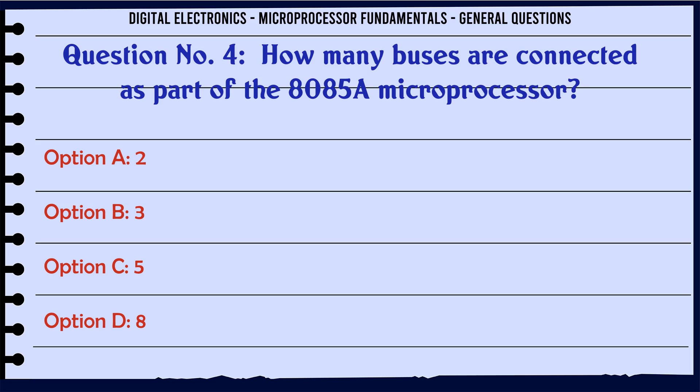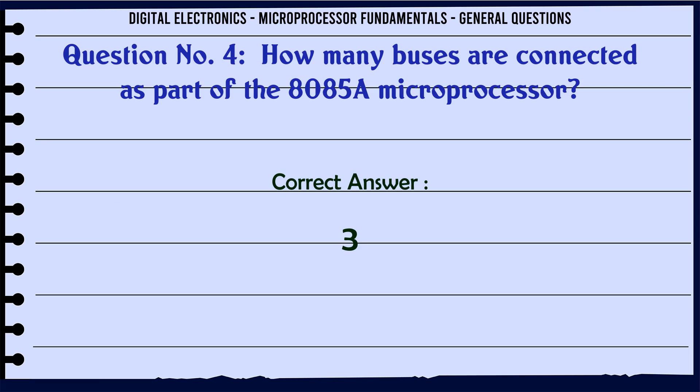How many buses are connected as part of the 8085A microprocessor? A. 2, B. 3, C. 5, D. 8. The correct answer is 3.